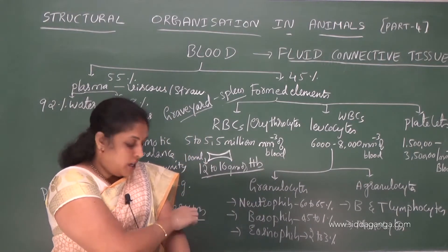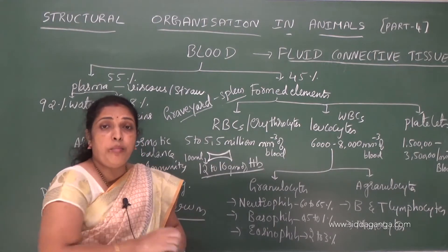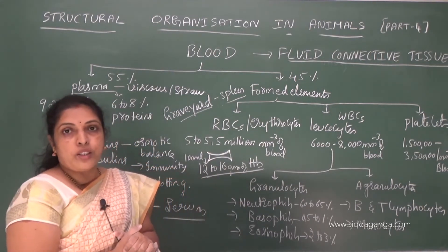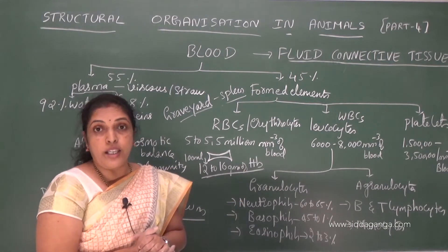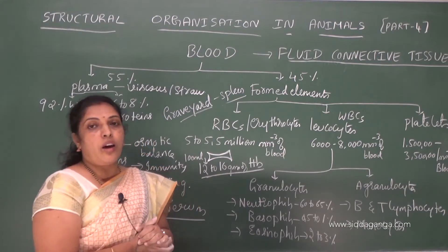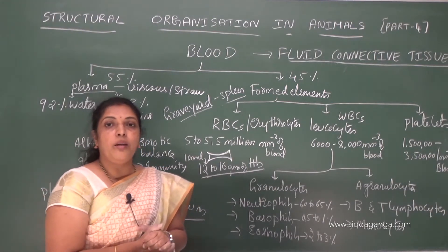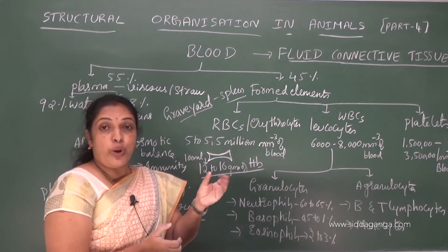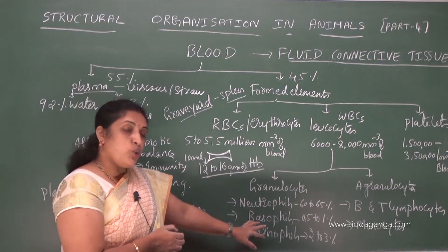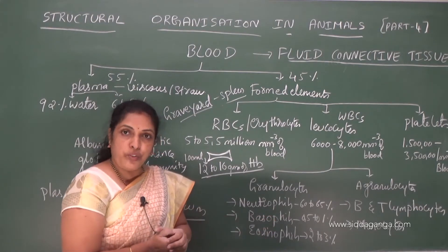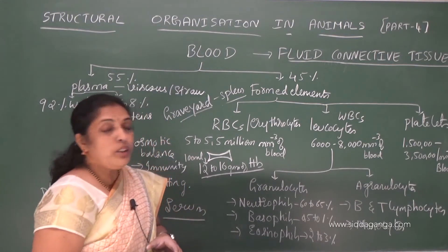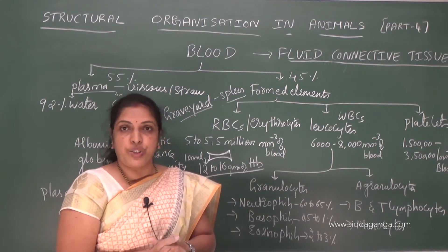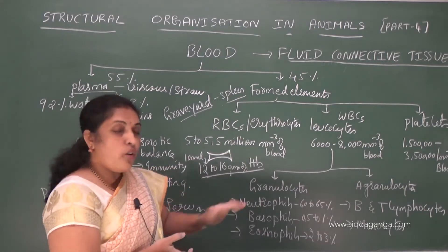Neutrophils provide immunity to our body by killing disease-causing microbes. Basophils secrete chemical substances like histamine and serotonin. Histamine is mainly responsible for allergic reactions and is a vasodilator. Serotonin is a vasoconstrictor. The number of eosinophils increases in allergic conditions.